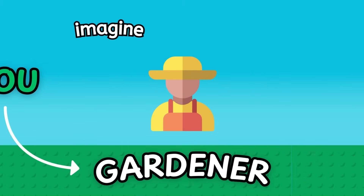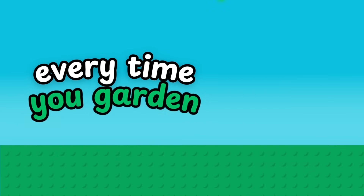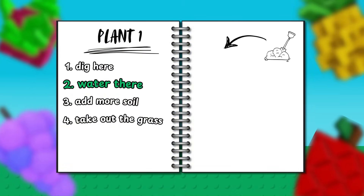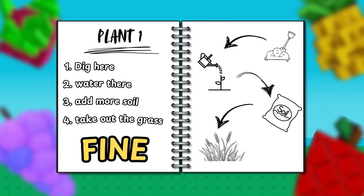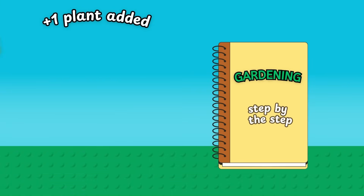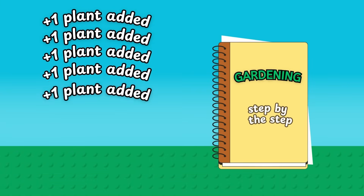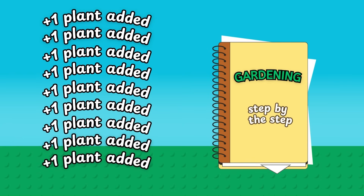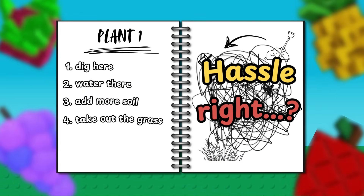Imagine you're a gardener and every time you garden you pull out a giant notebook where you've written every single step of what to do. Dig here, water there, add more soil, take out the grass. It works fine at first but the more plants you add, the heavier the notebook gets. It's messy, repetitive, and one tiny change means flipping through pages to rewrite everything. Hassle, right?